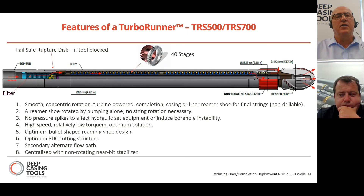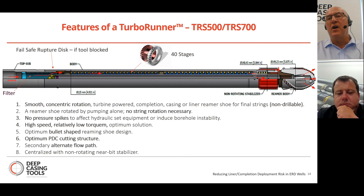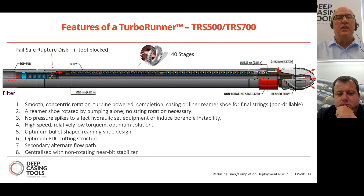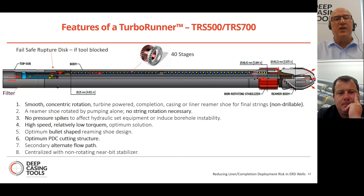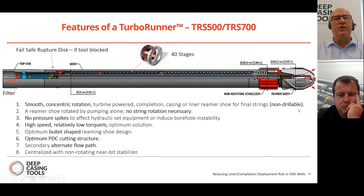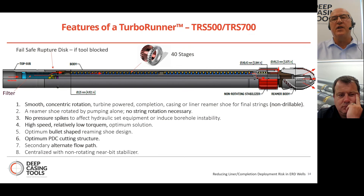Here's a cutaway picture of the Turbo Runner. Starting from right to left: the reaming shoe with bullet profile and PDC cutters is attached to a shaft that has turbine rotors and stators. Fluid is pumped through past a top assembly, deflecting fluid down through the turbines past the shaft, causing it to rotate and turn the reaming shoe. The top assembly also contains a burst disc — should the turbine sections become blocked, pressure builds up, the burst disc ruptures, and a secondary flow path is created down and out through the shoe.